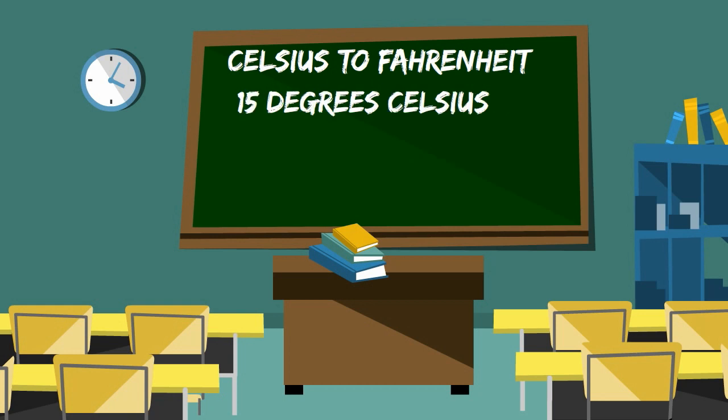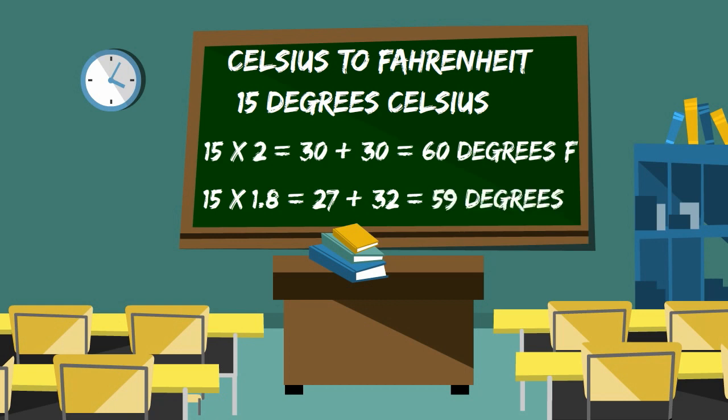How about 15 degrees Celsius? 15 times 2 equals 30 plus 30 equals 60 degrees Fahrenheit. Compare this to the real calculation: 15 times 1.8 equals 27 plus 32 equals 59.